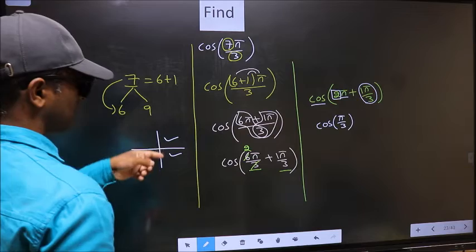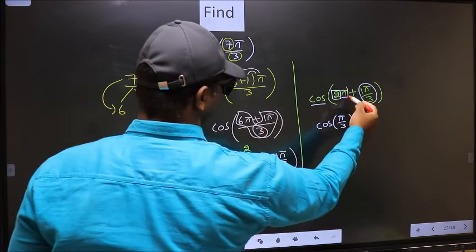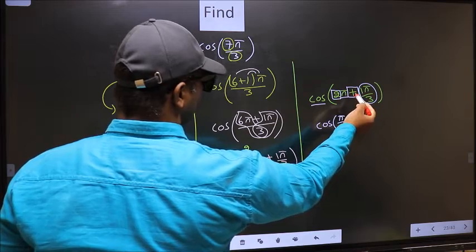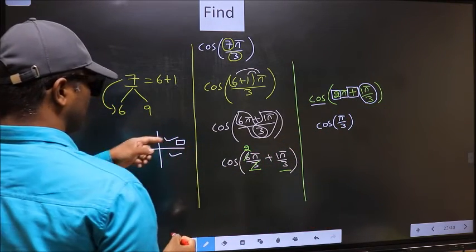...they lie either in the first or in the fourth quadrant. So, now to check which quadrant, we should look at this symbol. Here we have plus.